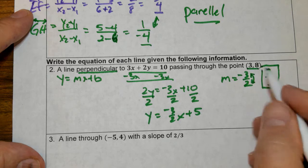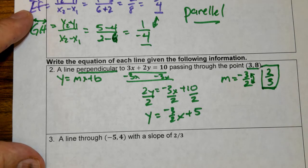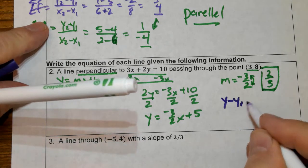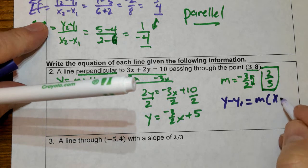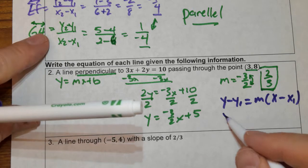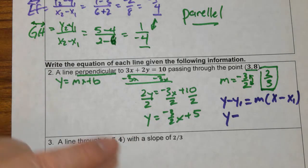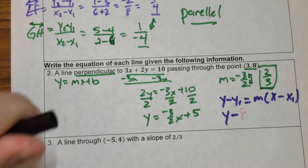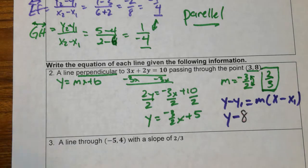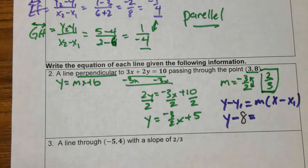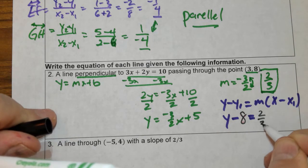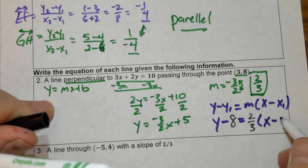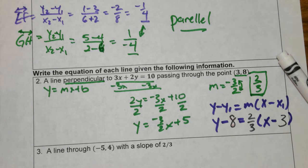Now I have a point and a slope. Using point-slope form: y minus y1 equals m times x minus x1. Plugging in: y minus 8 equals 2 thirds times x minus 3. That's our solution for number 2.